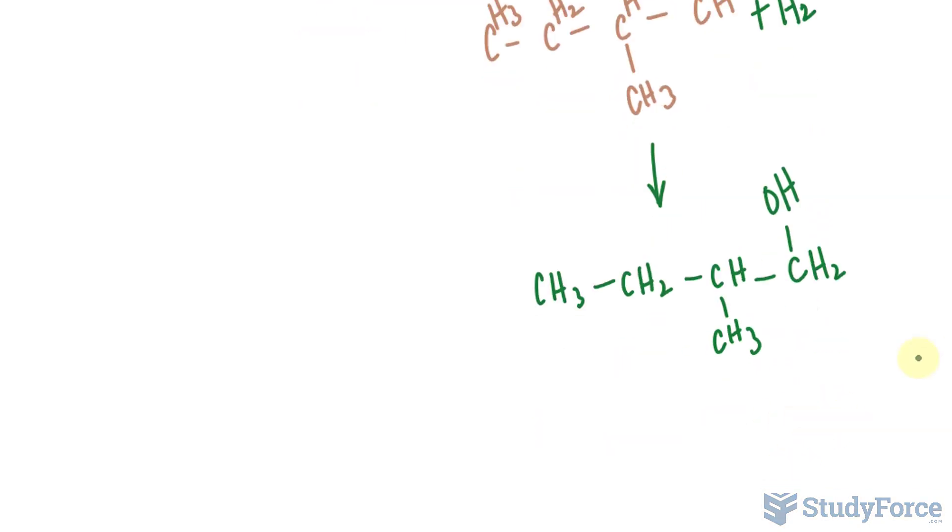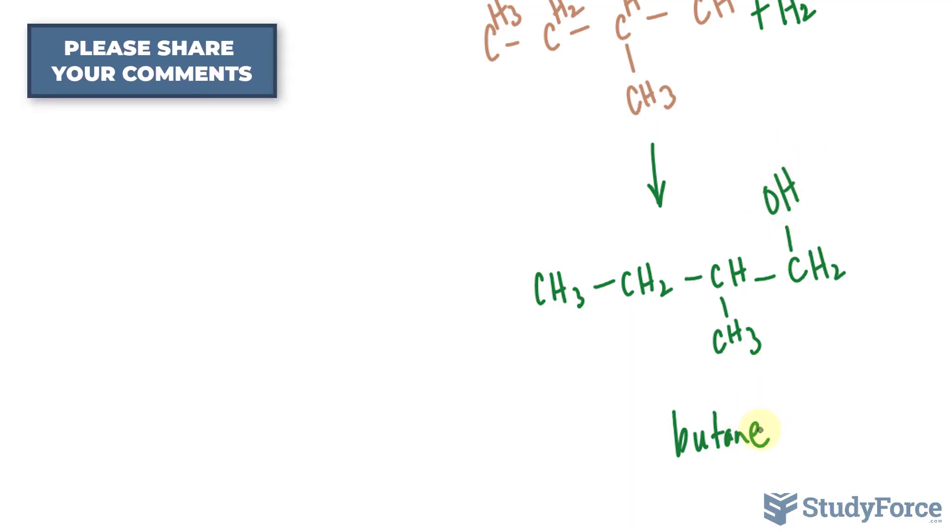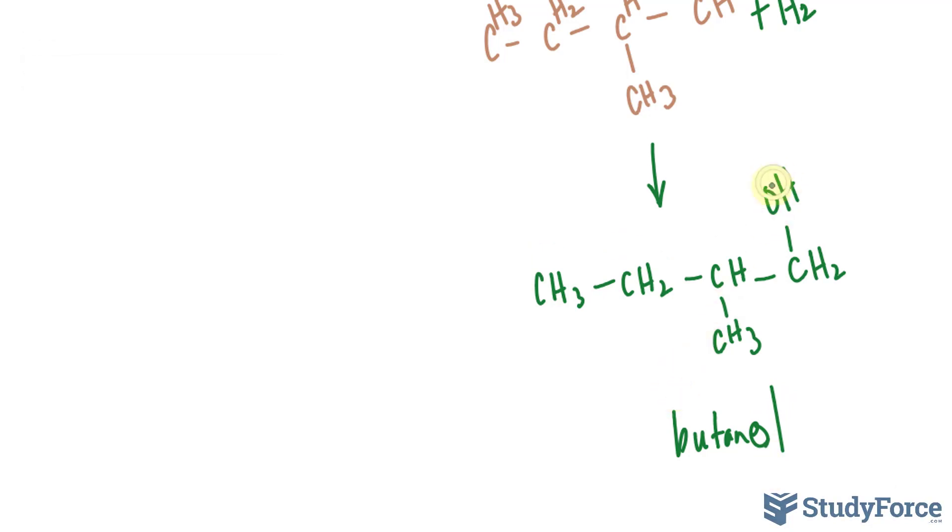To name this, we can say that we have a butanol, butane. It's now an alcohol, so we write down butanol. It's happening on the first carbon, and the methyl part doesn't change. So 2-methyl-1-butanol.